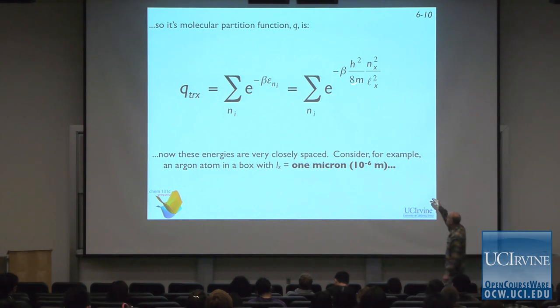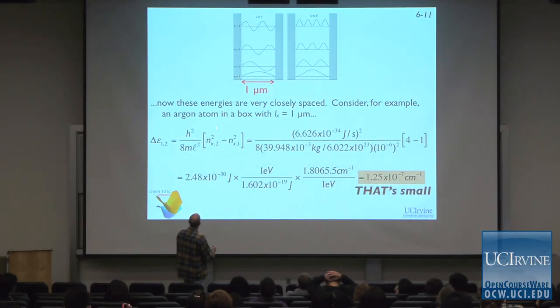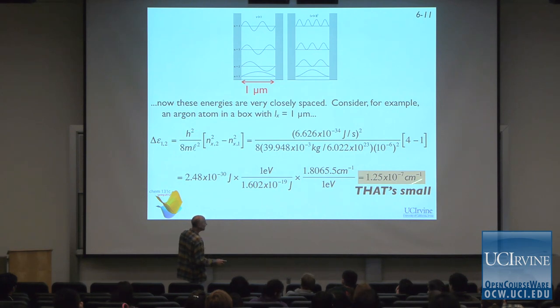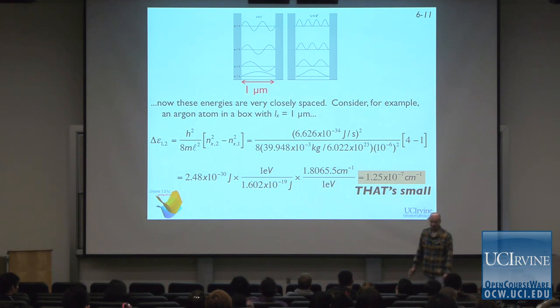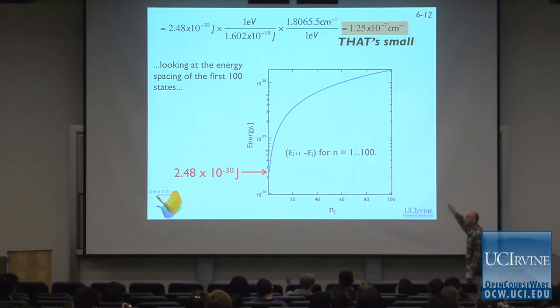One consequence is that the energies are very closely spaced. We did an example with a box one micron in size — about the size of a bacterium, the smallest thing visible in an optical microscope. The difference in energy between the ground state and the first excited state is one ten-millionth of a wave number — unbelievably small. Translational states are quasi-continuous, with hardly any energy spacing, and as the box gets bigger the spacing gets smaller still.